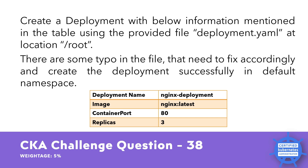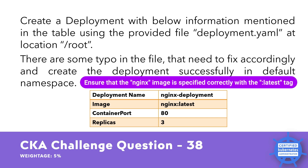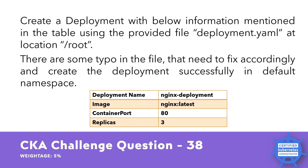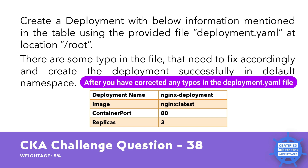To complete this task, open the provided YAML file and identify any errors or typos in the configuration. Specifically, ensure the nginx image is specified correctly with the latest tag, the container port is set to 80, and the number of replicas is set to three. The deployment.yaml file includes a spec section that defines the desired state, including replicas, container image, and other configuration options.